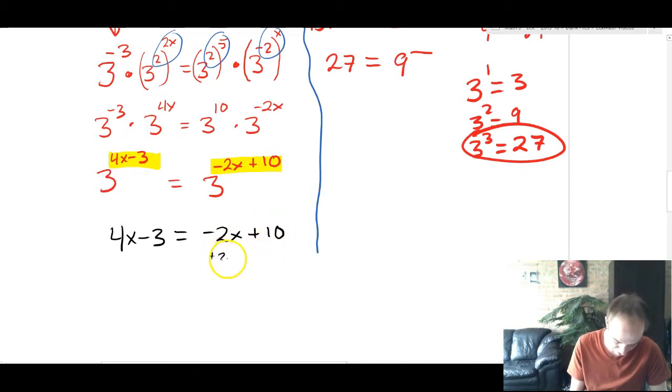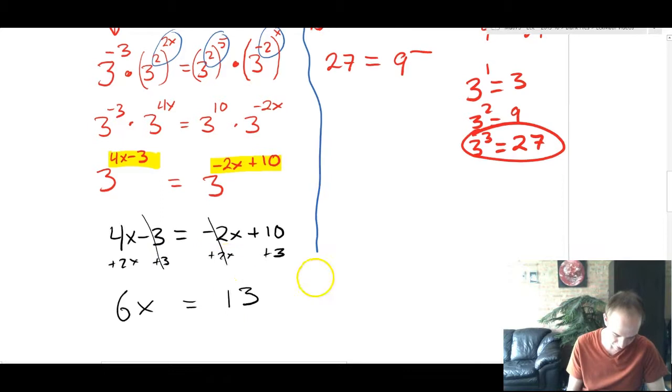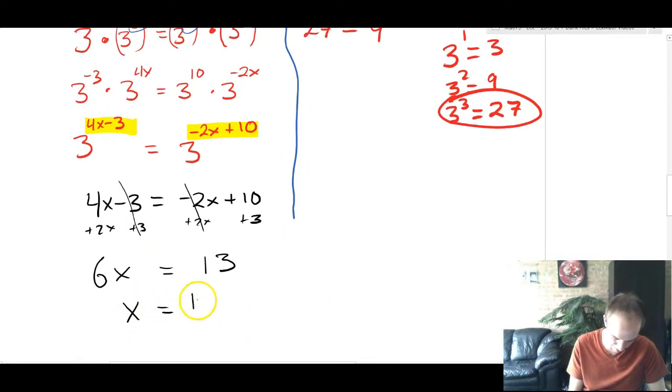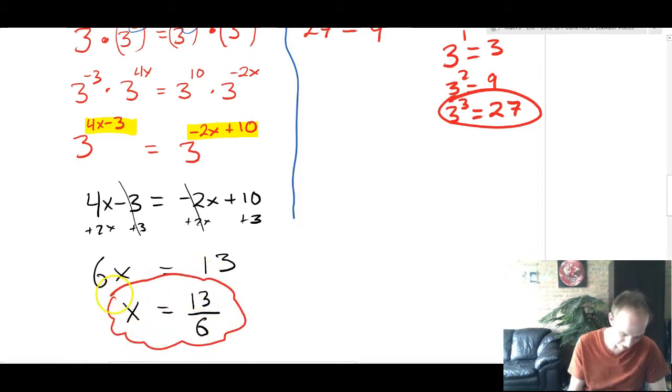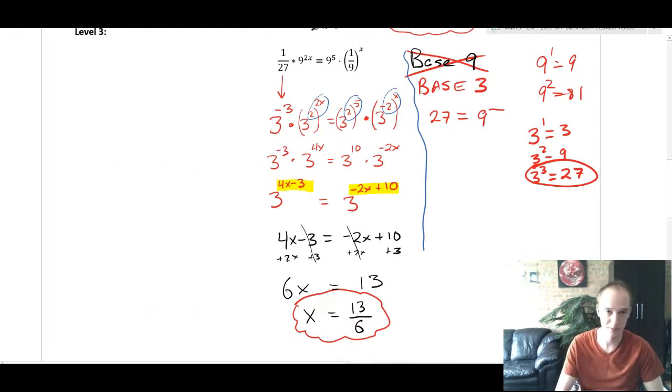So I'm going to add 2x. I'm going to add 3. I much prefer adding to subtracting. Notice that I always just add wherever there's a negative to move that negative over. So I'm going to get 6x = 13 as these things cancel with each other. And so x will equal 13 divided by 6. Again, you should check this answer by plugging it all back in. But I'm trying to keep this video short, so I'll spare you that.